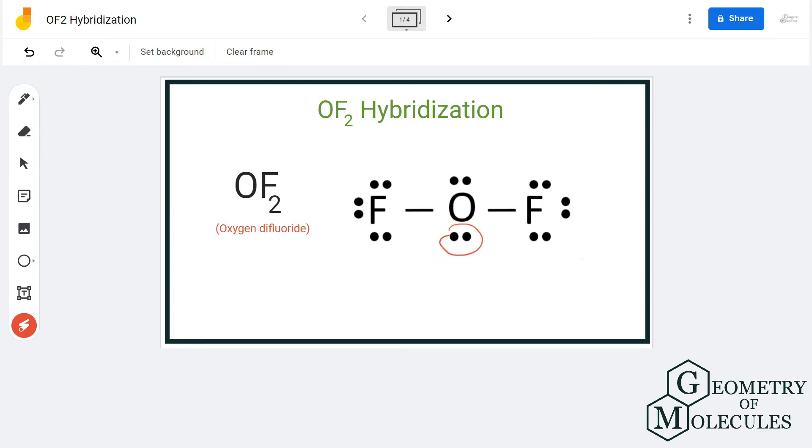If you look at the total number of bonding pairs and lone pairs, the total comes to four, and hence it needs to form four hybrid orbitals to accommodate all these electrons.